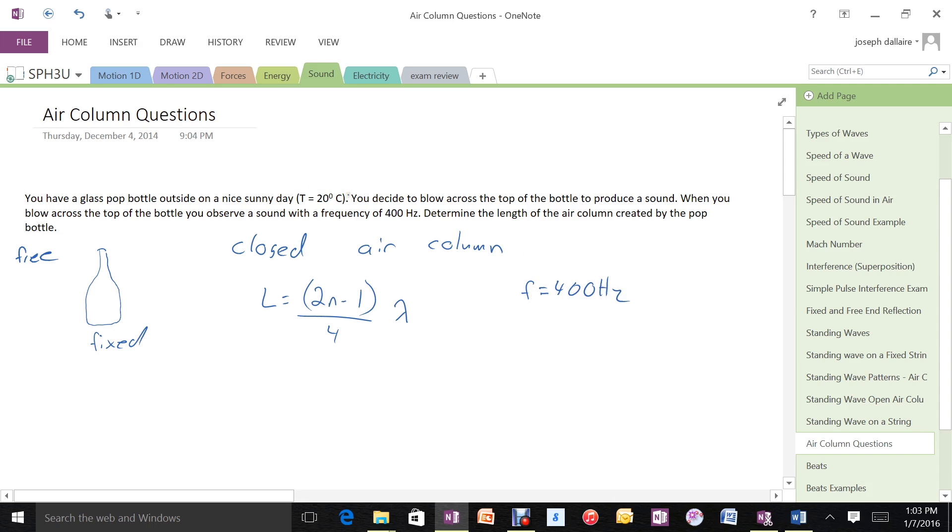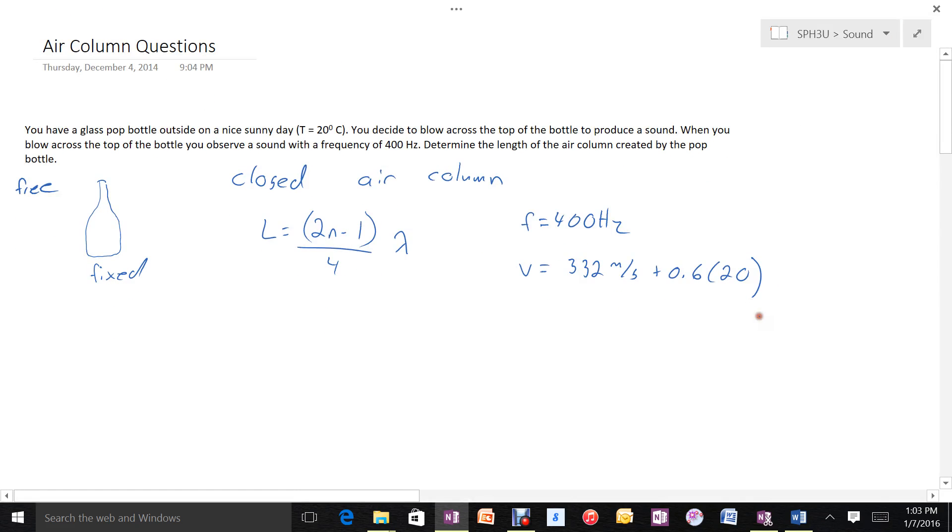Here's our pop bottle. We have a fixed end and a free-end reflection, making this a closed air column. This means there's a specific relationship between its length and the wavelength of sound produced in it.